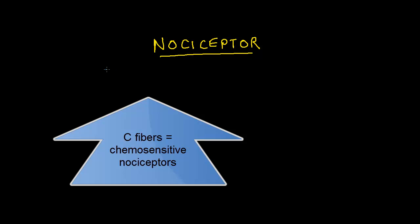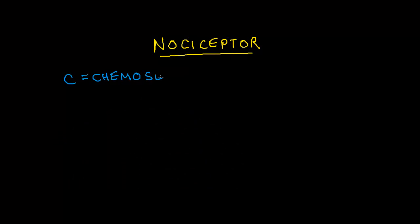One type of fiber are called the C fibers. These are called the chemosensitive nociceptors and will depolarize in the presence of altered chemical activity or irritating chemicals. Some key things about this: this is the most numerous peripheral receptor there is. It is also the most numerous of all nociceptors.